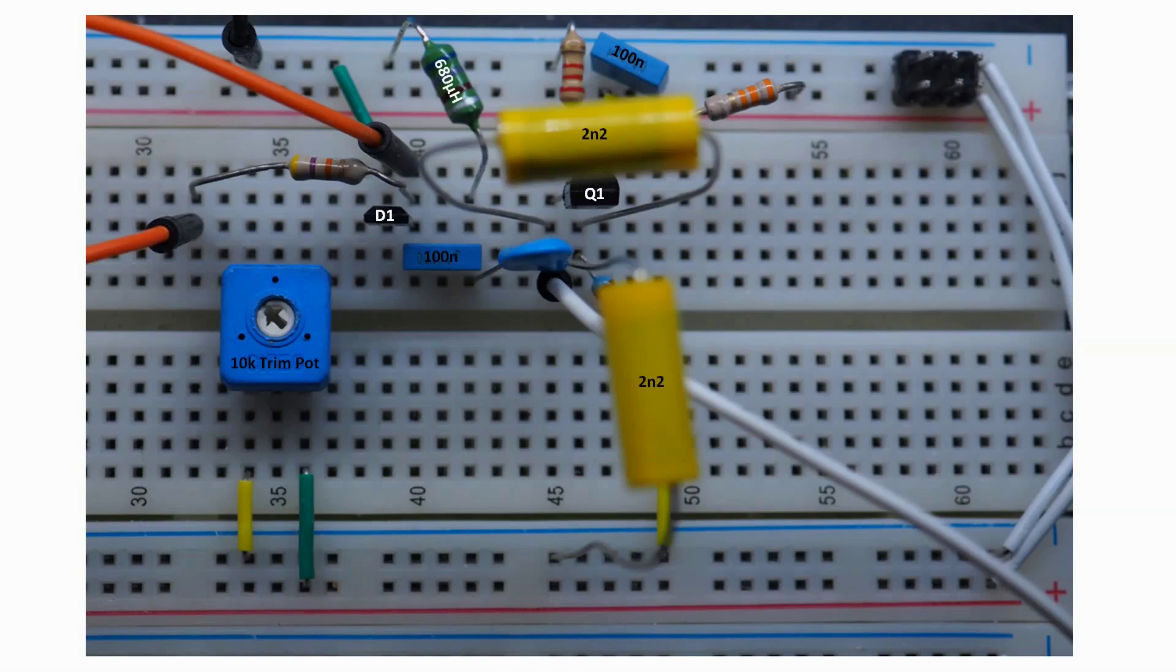Hopefully you can work out for yourselves the values of the resistors and finally the trim pot for doing control is the square blue component on the center left hand side. The diode is labeled D1 and the transistor I've labeled Q1 so that's the breadboard layout let's now go and have a look on the bench.